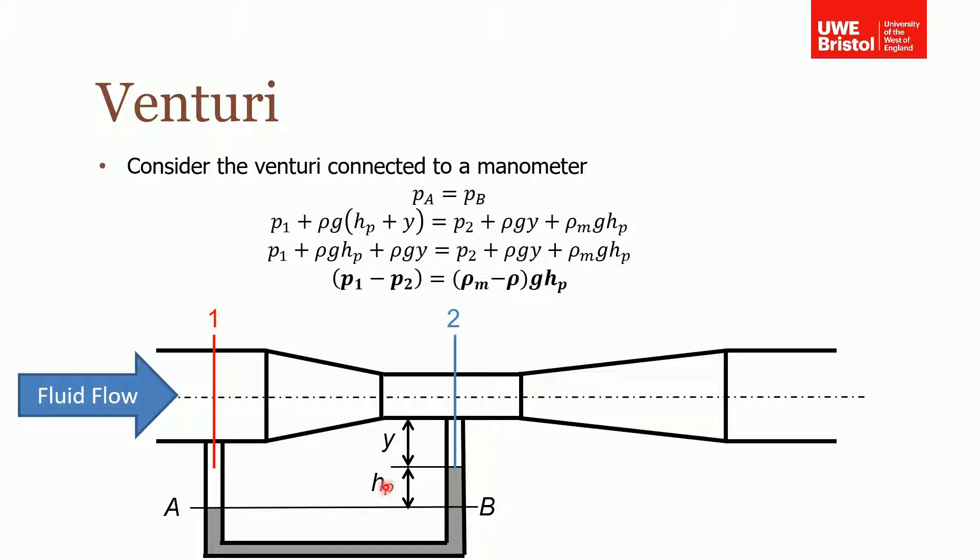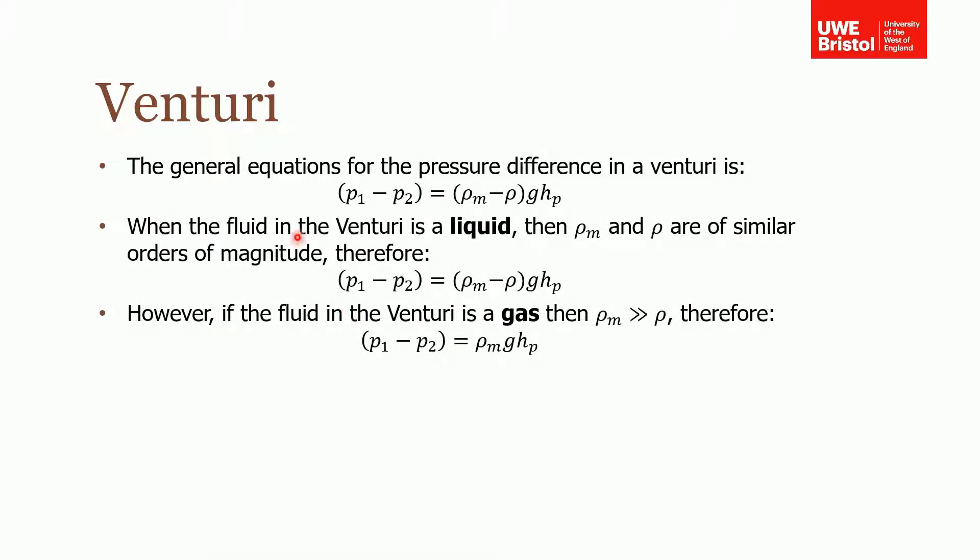Okay, so in general, the equation for pressure difference is this. I'm not going to repeat it, the one that we found on the previous slide. Now when the fluid in the venturi is a liquid, then the density of the liquid in the manometer and the density of the liquid in the pipe are going to be of similar orders of magnitude. Therefore we use the equation as is.